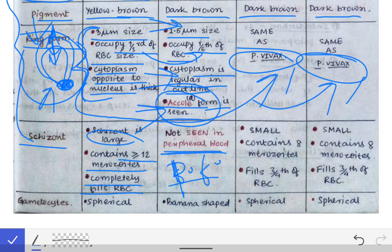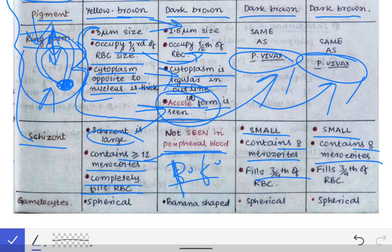In case of Plasmodium ovale and Plasmodium malaria, the schizont is smaller than that of vivax and contains only 8 merozoites. These schizonts fill about three-fourths of the RBC, whereas the vivax schizont completely fills the RBC.